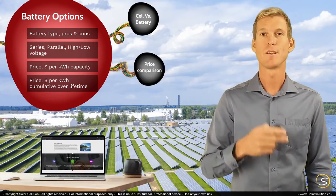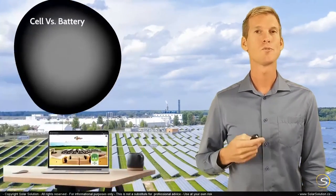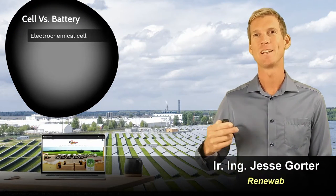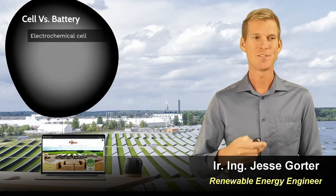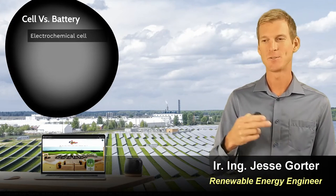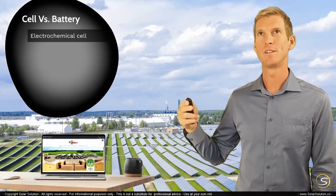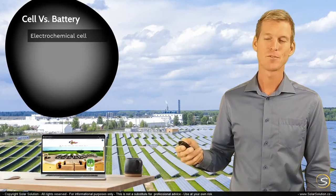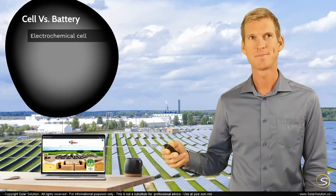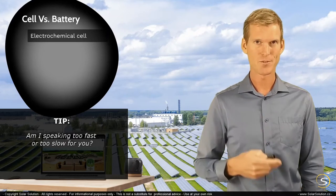Let's look at the first chapter on cell versus battery. An electrochemical cell is able to take electrical energy and turn it into chemical energy. As you are charging your battery, you are taking electrical energy and turning it into chemical energy and storing it. As you are discharging an electrochemical cell, you're taking chemical energy from the battery and turning it into electrical energy that you can use.